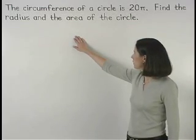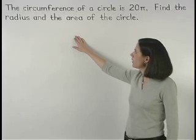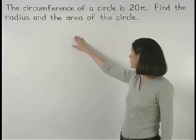The circumference of a circle is 20 pi. Find the radius and the area of the circle.